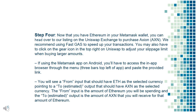Step 4: Now that you have Ethereum in your Metamask wallet, you can head over to our listing on the Uniswap exchange to purchase Axion. We recommend using FastGas to speed up your transactions. You may also have to click on the gear icon in the top right on Uniswap to adjust your slippage limit when buying larger amounts. If using the Metamask app on Android, you'll have to access the in-app browser through the menu (3 bars, top left of app) and paste the provided link.